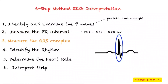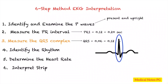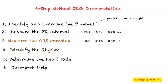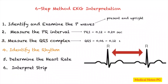Step three is to measure the QRS complex. Just like the PR interval, measure the small boxes within the QRS complex. The normal range is 0.06 to 0.12 seconds; anything more than 0.12 seconds could indicate a dysrhythmia such as a PVC.